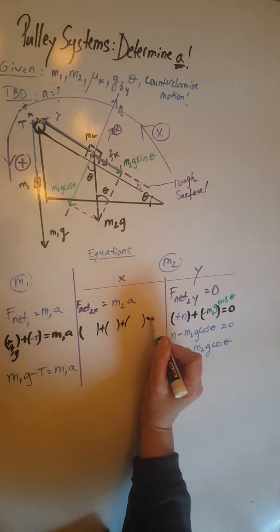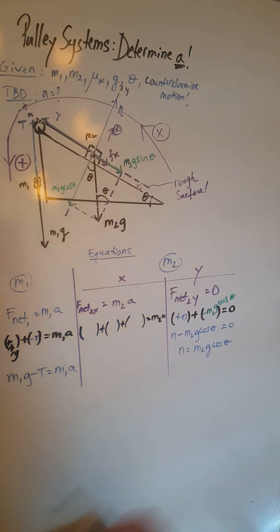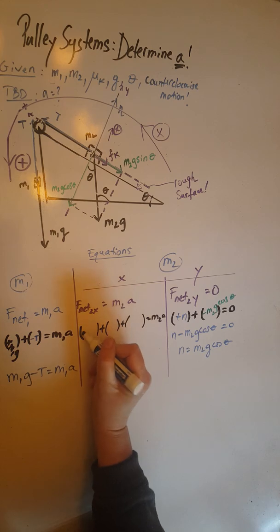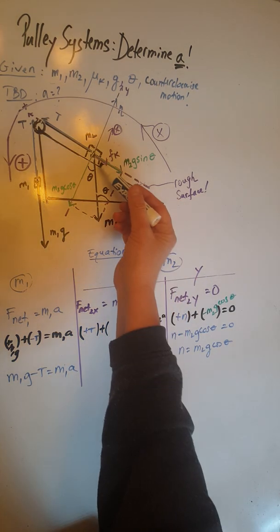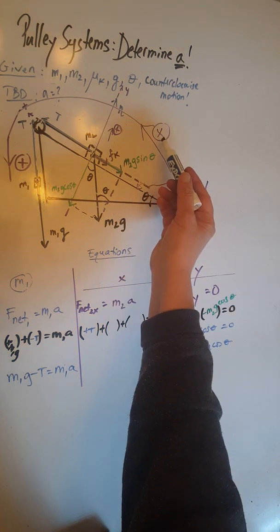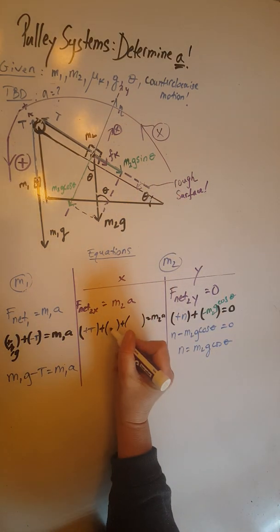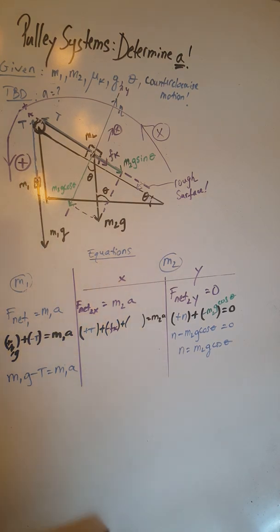Well, these three forces are positive T going in the positive direction, negative fk in the opposite of my chosen positive direction, and negative m2g sine theta. So negative fk and negative m2g sine theta.